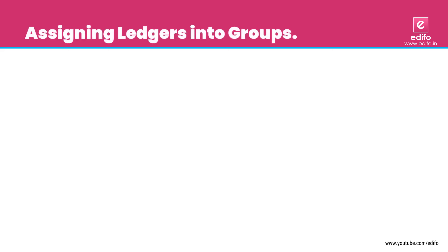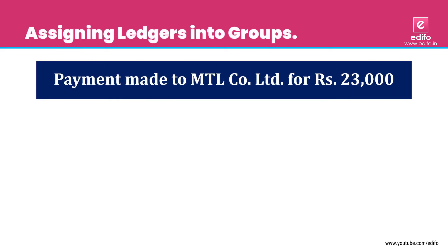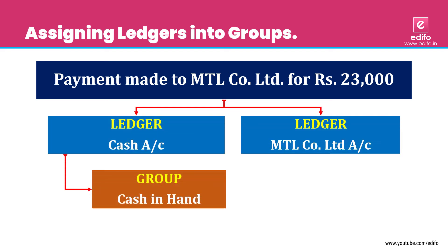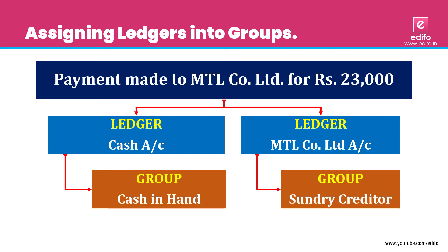Next transaction: payment made to MTL Company Limited, rupees 23,000. Outflow of cash because MTL Company Limited is a sundry creditor — we purchased goods from them. Two aspects: cash account and MTL Company Limited account. Cash is 'Cash in Hand' and MTL Company Limited is a 'Sundry Creditor'.